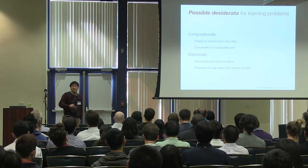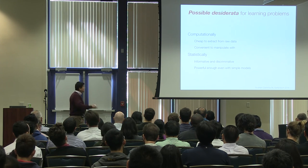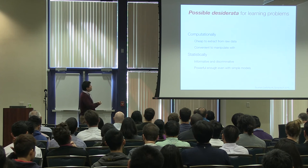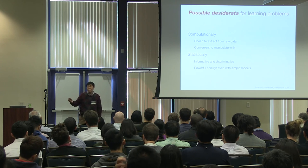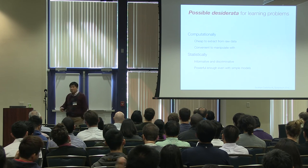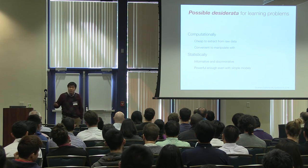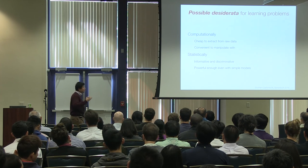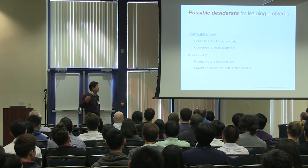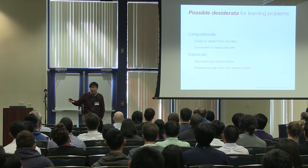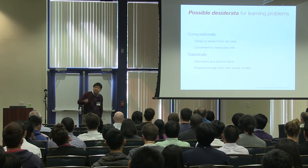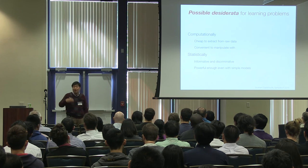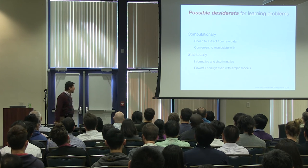Computationally, we want something simple — easy to compute and convenient to manipulate. Statistically, when we use those representations to build a classifier, we want the features to be informative and discriminative, such that even with a very simple statistical model, we can build a robust, good-performing classifier.